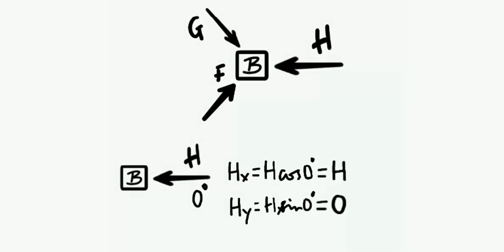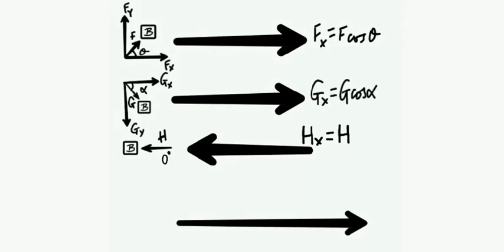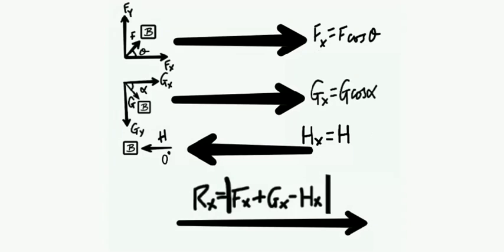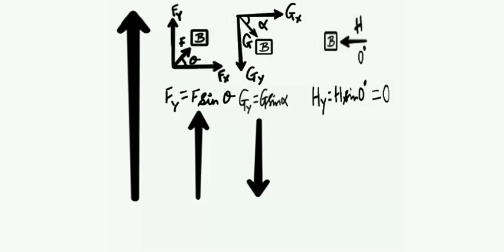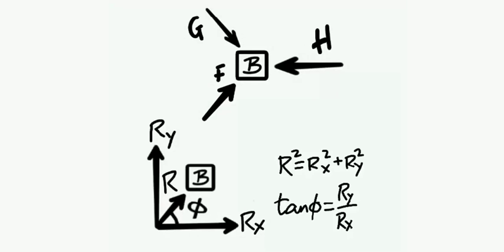Now, combining all the horizontal forces Fx, Gx, and Hx — considering their individual directions — the net resultant Rx = Fx + Gx − Hx. For the vertical forces, we have Fy, Gy, and Hy (where Hy = 0), so the net resultant Ry = Fy − Gy. The overall resultant R is the vector addition of Rx and Ry, with magnitude R² = Rx² + Ry² and direction given by tan(phi) = Ry / Rx.